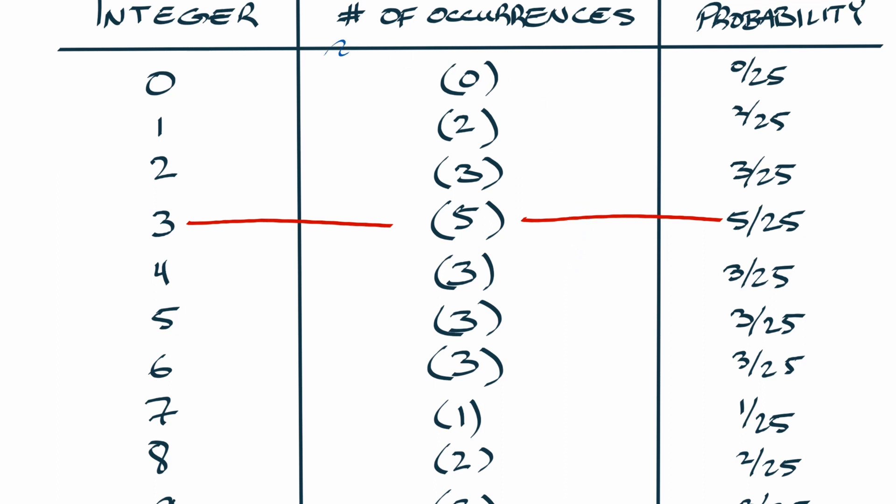The way that I'm going to do that is essentially just make tick marks here. So there's no occurrences of zero, there's one, two, three, four, five, six, seven, eight, nine, ten, eleven, twelve, so the 13th occurrence happens on the digit four.